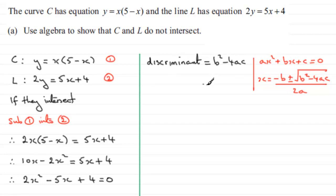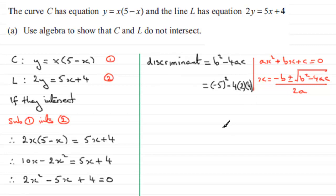What would the discriminant be for our equation? Well, b is negative 5, so we've got minus 5 all squared, minus 4 times a times c. A is 2 and c is 4, so that's 4 times 2 times 4. So we get 25 minus 4, 2s are 8, 8 fours are 32. So 25 minus 32, which is minus 7.